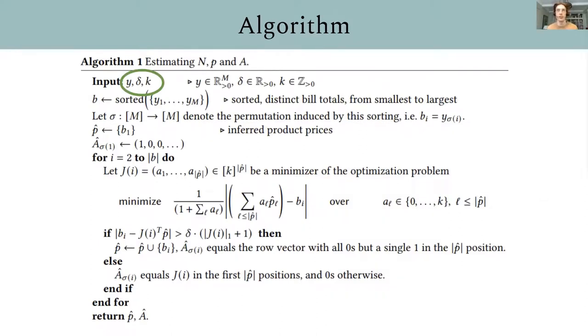I'm not intending for you to read this slide, the point is the algorithm is a little involved. And I'll step through the intuition in a second. But just looking at the inputs, which are circled, we take a vector of bill totals, error tolerance delta, which we'll explain, and a constraint k.